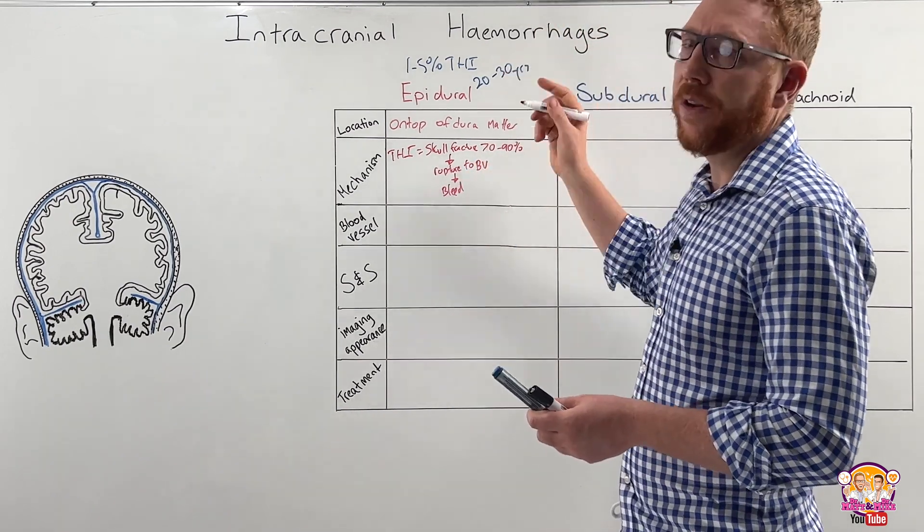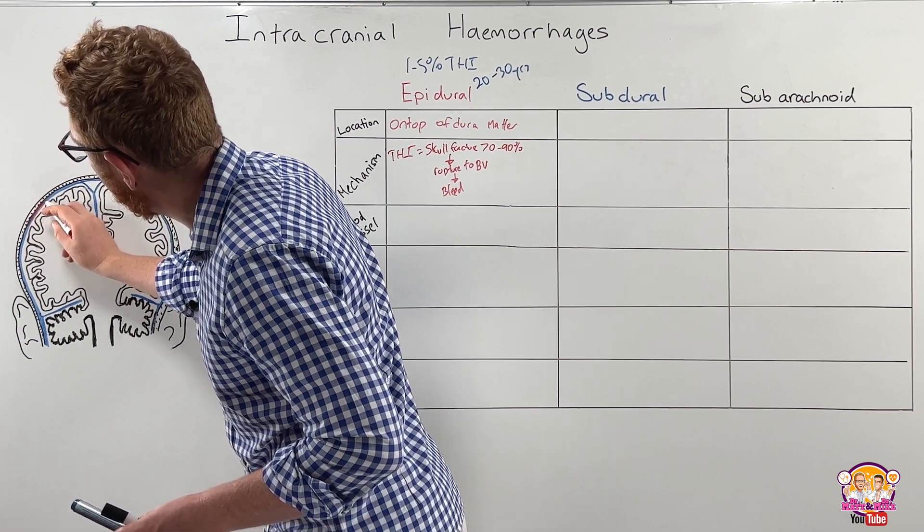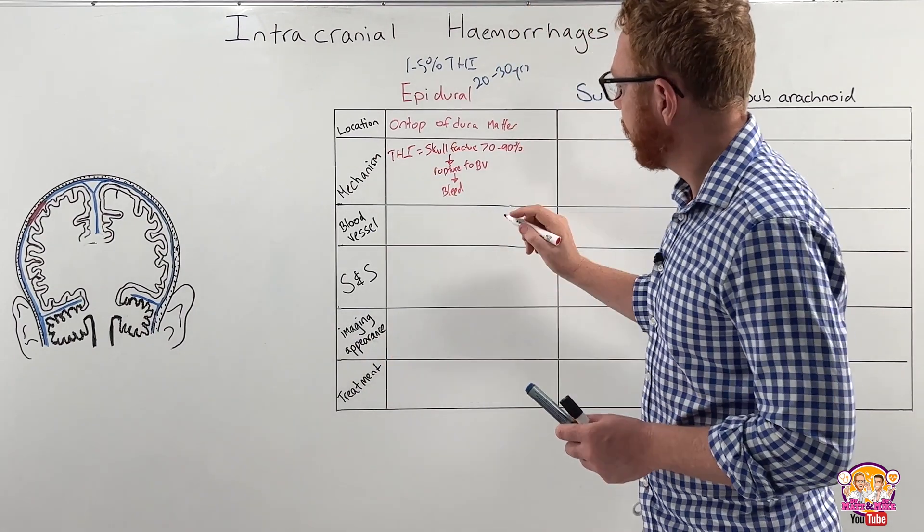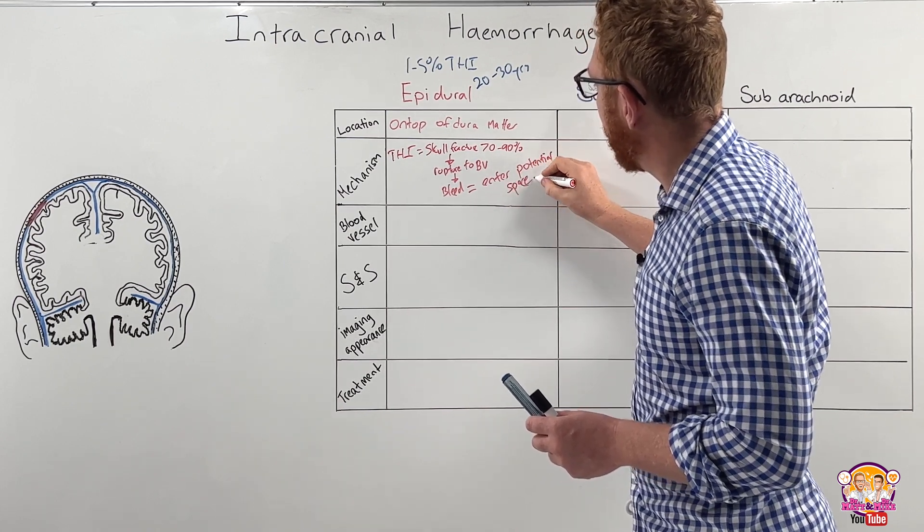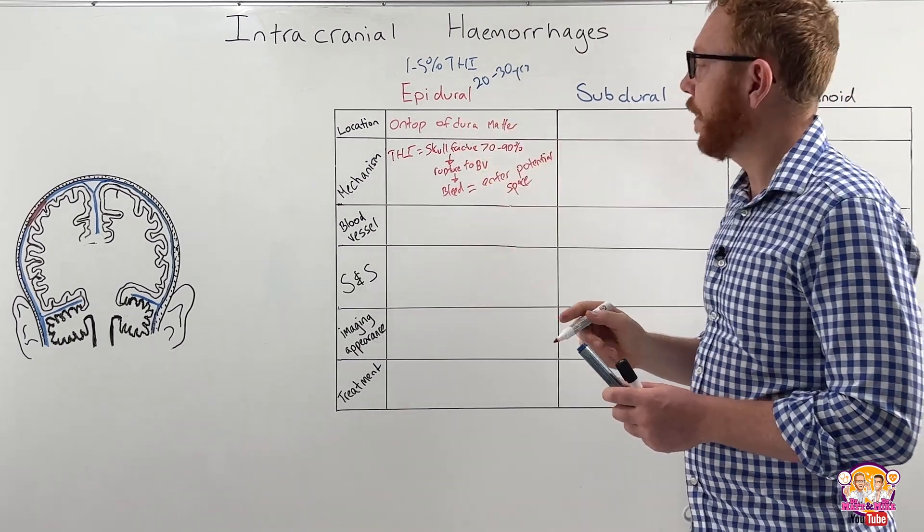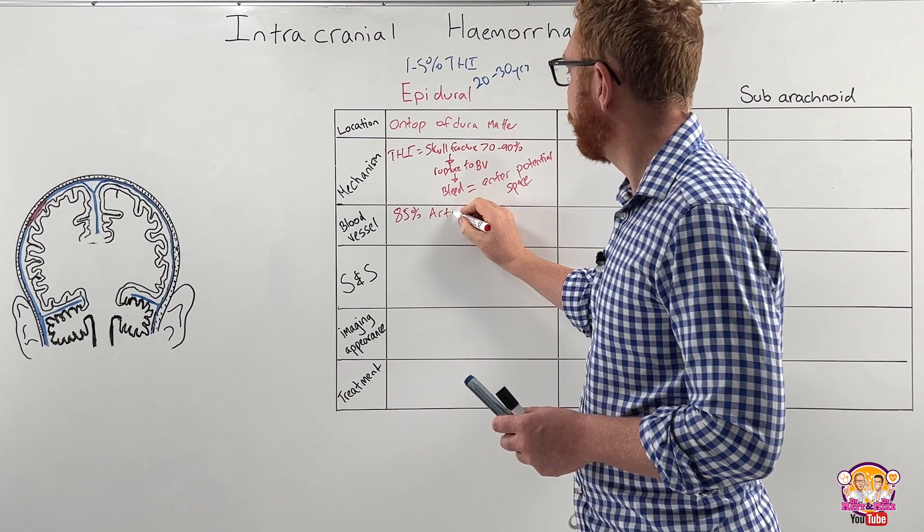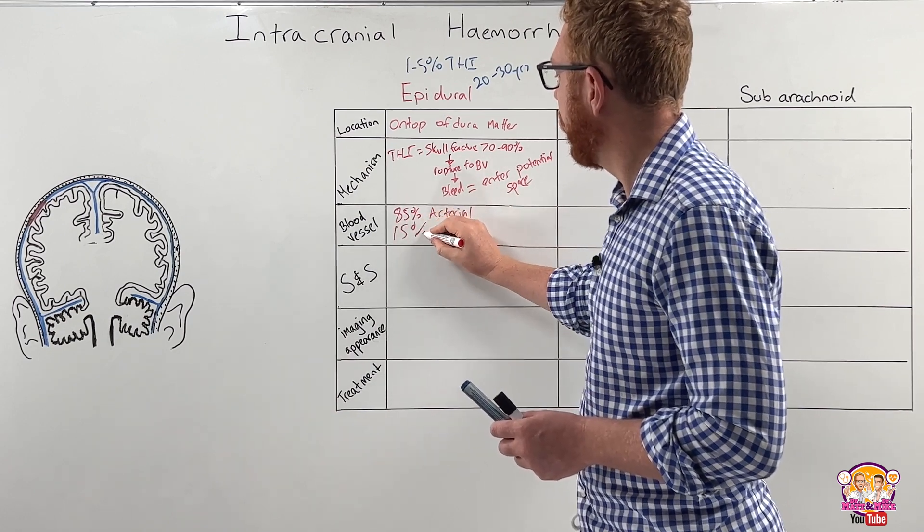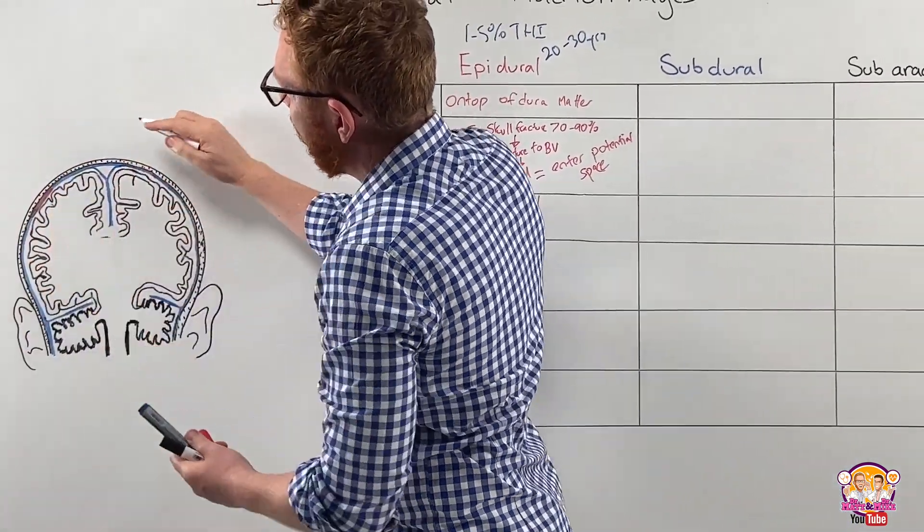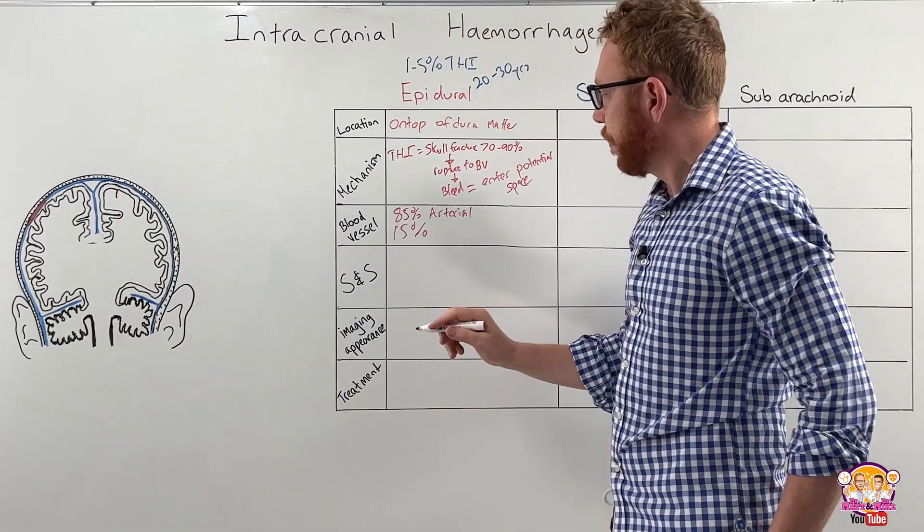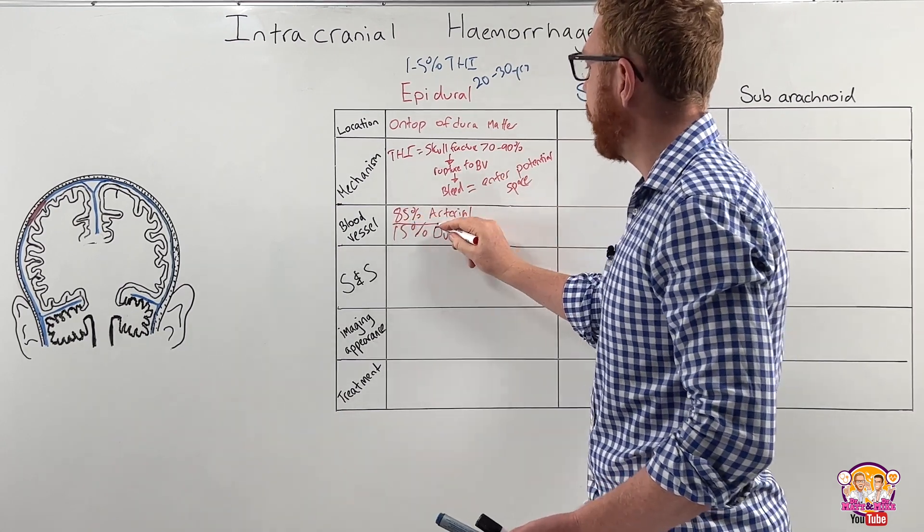So the bleed now takes hold, that's the hemorrhage, and starts to fill that potential space up between the dura and the skull. So we have a bleed entering potential space between the skull and the dura mater. The blood vessel, 85% of epidural bleeds is arterial, which leaves us with 15% which is the dural sinuses. The dural sinuses is where the venous blood which drains the brain goes into and drains away, going into your jugular veins.